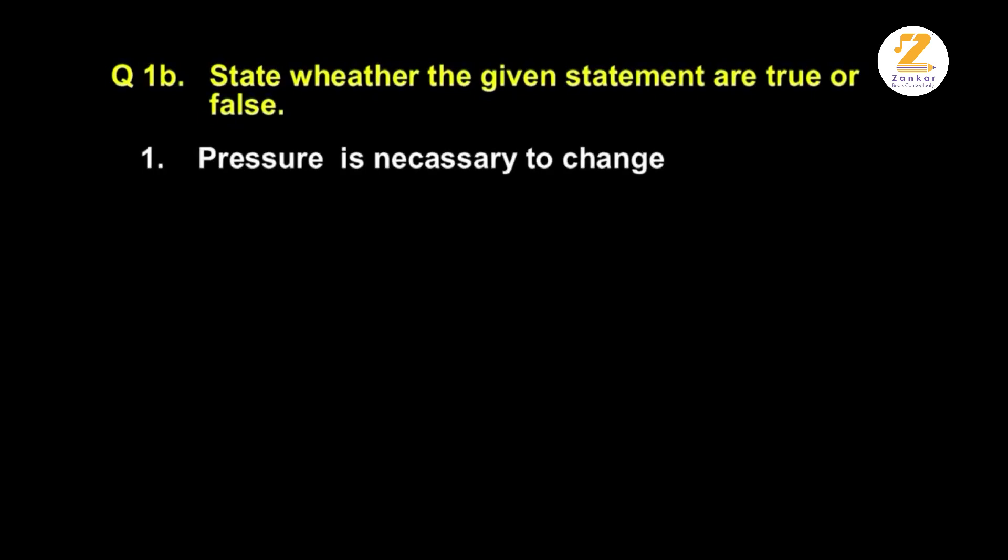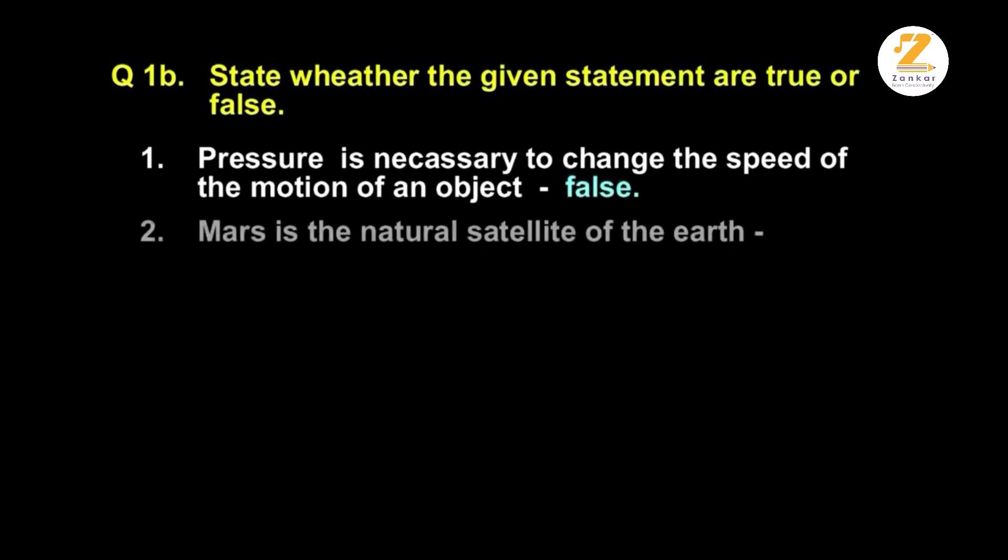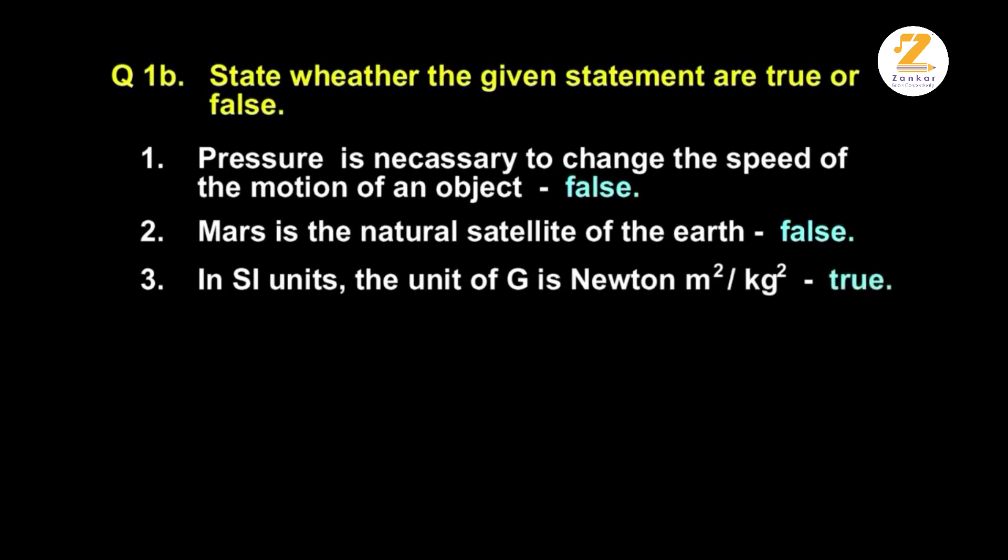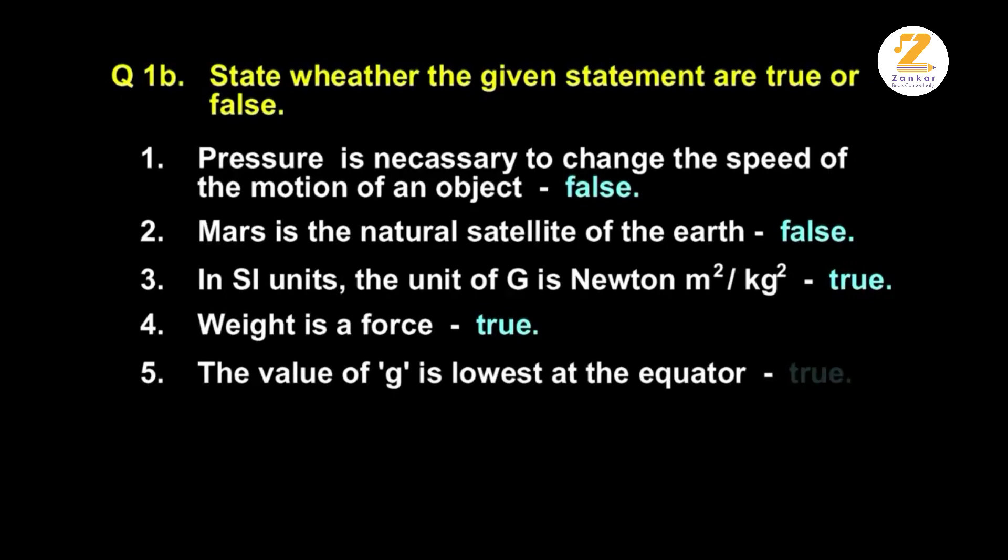Question 1b, state whether the given statements are true or false. Pressure is necessary to change the speed of the motion of an object, false. Mars is the natural satellite of the earth, false. In SI units, the unit of capital G is Newton meter square per kg square, true. Weight is a force, true. The value of g is lowest at the equator, true.